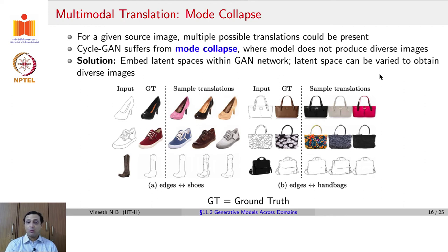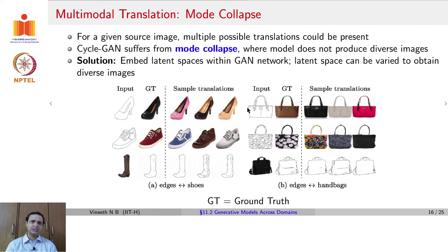Recall that VAEs introduce a latent space that is learned through an encoder-decoder framework. These methods embed latent spaces inside the GAN framework to address the mode collapse problem. What we ideally want is: given an input edge image or sketch, one would want several kinds of domain translations — a pink shoe, a black shoe, or a beige shoe — based on certain changes in a latent variable learned through a VAE. You can see applications of such an approach in fashion and apparel.